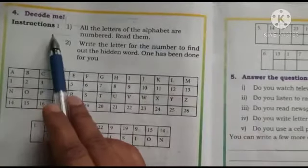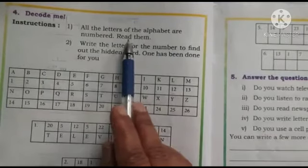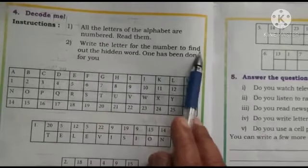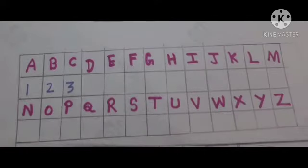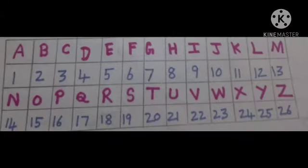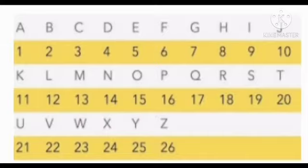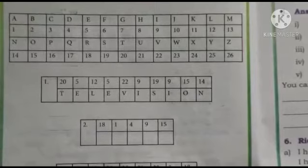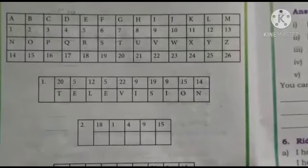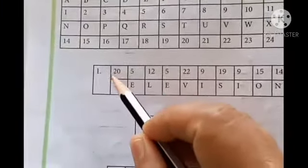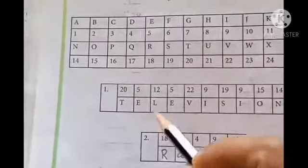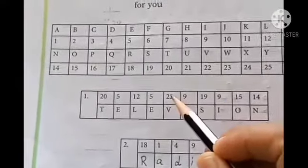Decode me. Instructions: all the letters of the alphabet are numbered. Read them. Write the letters for the numbers to find out the hidden word. One has been done for you. For 20 — T will come. For 5 — E will come. For 12 — L will come. For 22 — V will come.